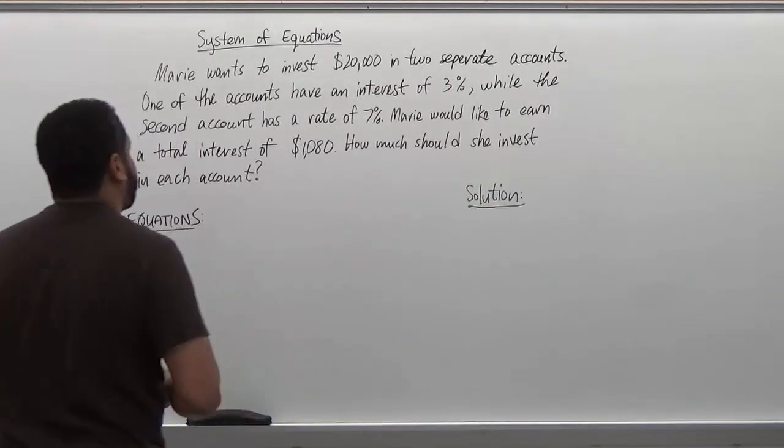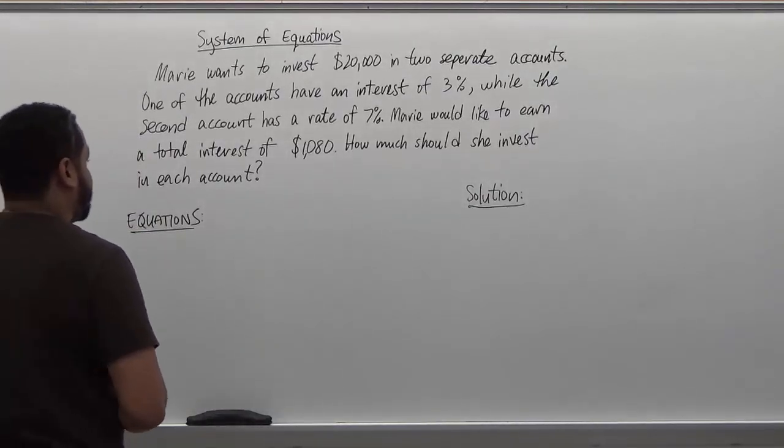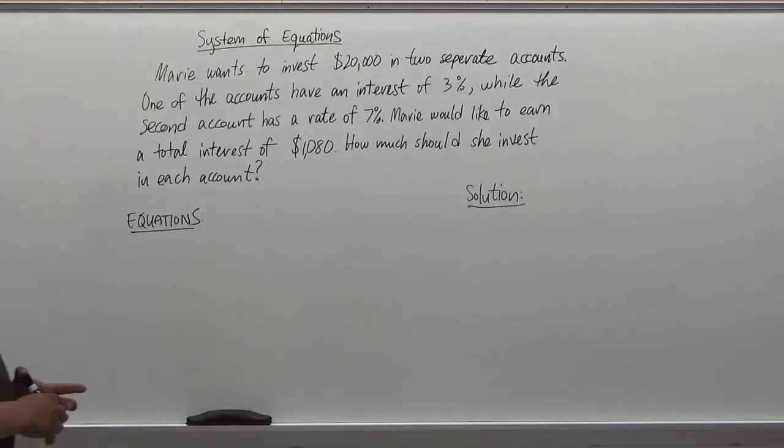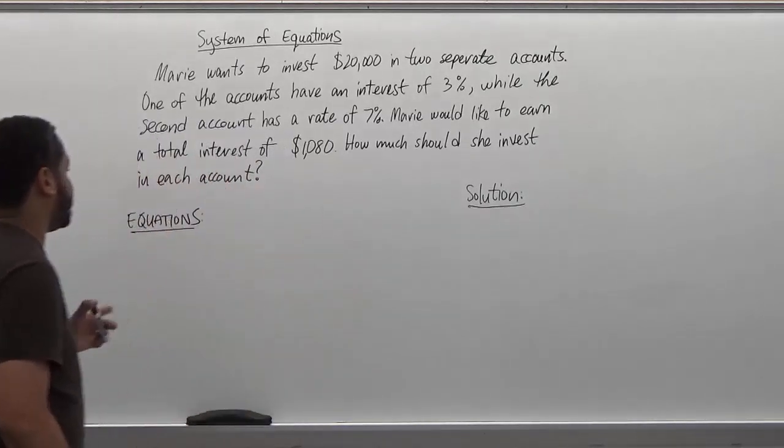So here we have our problem. Marie wants to invest $20,000 in two separate accounts. One of the accounts has an interest of 3% while the second account has a rate of 7%. Marie would like to earn a total interest of $1,080. How much should she invest in each account?